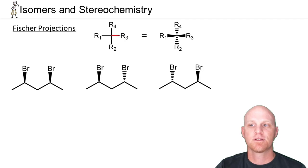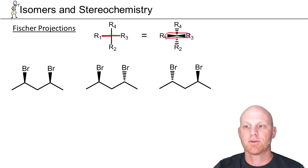In this case, these horizontal bonds on a Fischer projection correspond to the wedged bonds here on the horizontal, and the vertical positions on a Fischer projection correspond to dashed bonds.